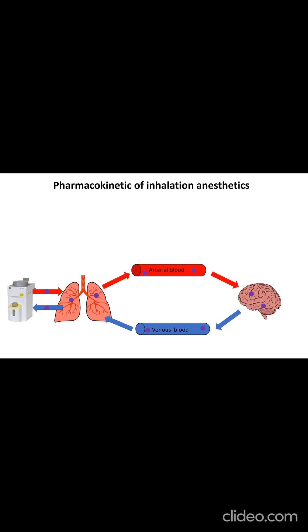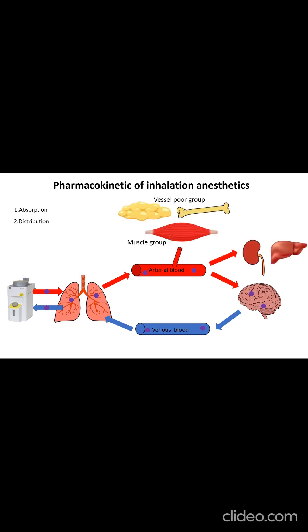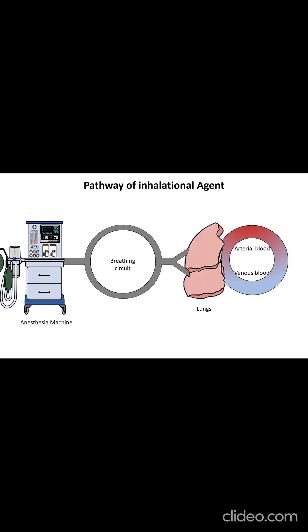The pharmacokinetics of inhalational anesthetics involves their uptake through the lungs, distribution into various tissue groups, metabolism by the liver, and elimination primarily through the lungs.